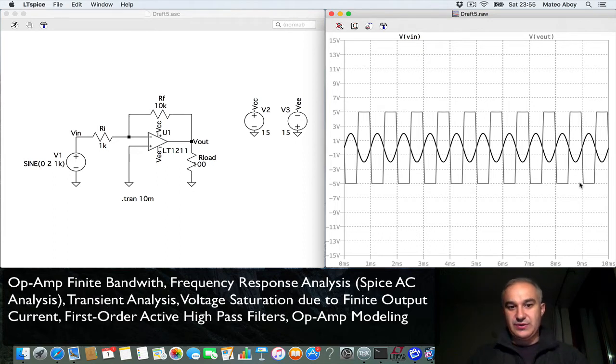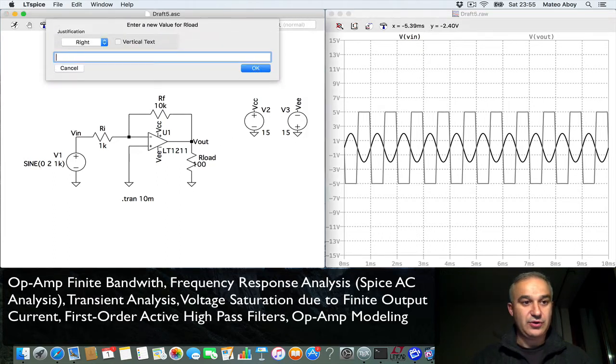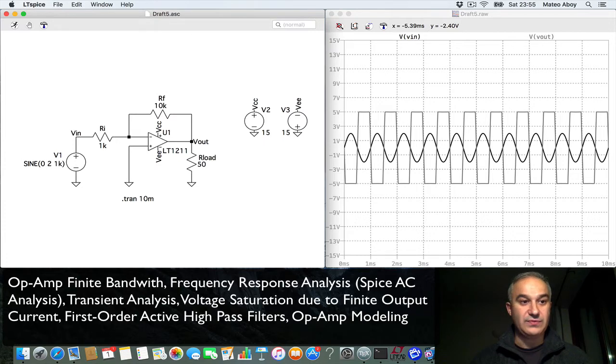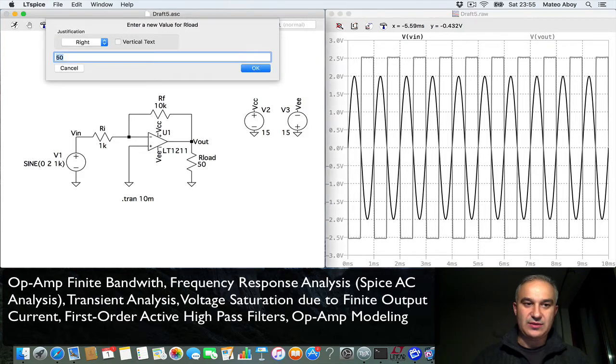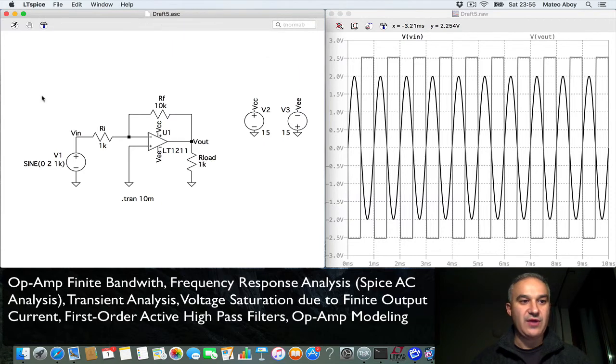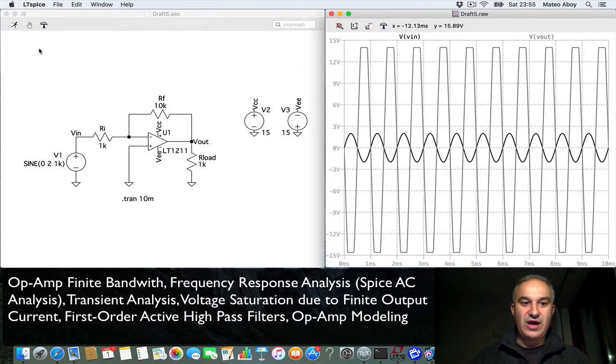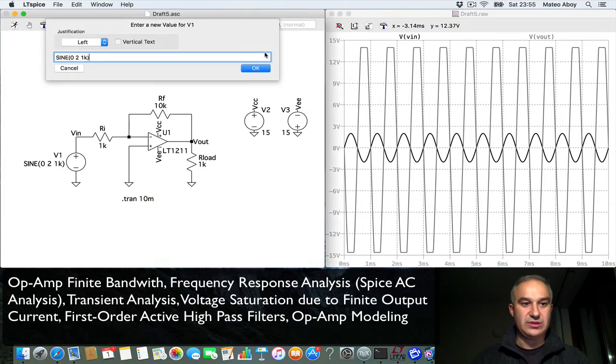The line thickness that we have right now is one. You put two, it's much easier to see. Okay, so that's an example there of a non-ideality due to the maximum output current, or the finite output current.